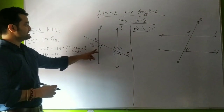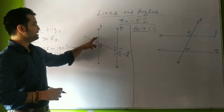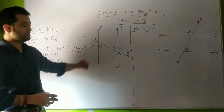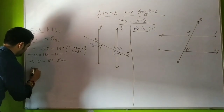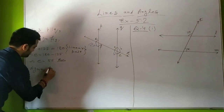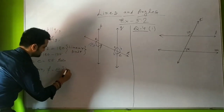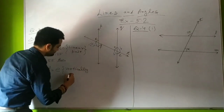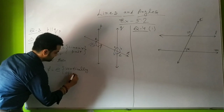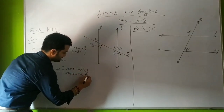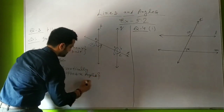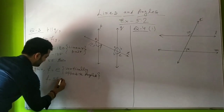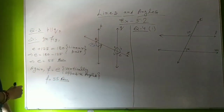Now for the second unknown angle from this segment: E and F are vertically opposite angles, so angle F will be equal to angle E because they are vertically opposite angles. Therefore F = 55 degrees.